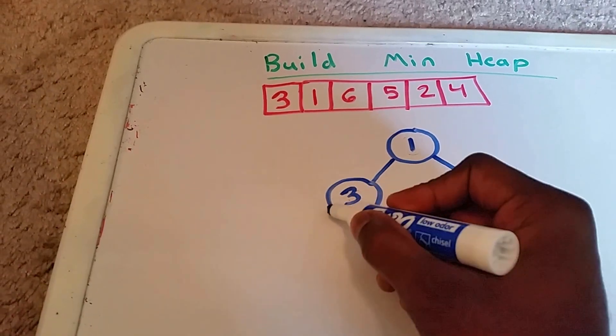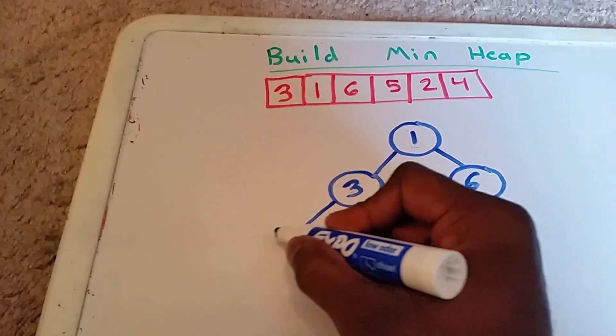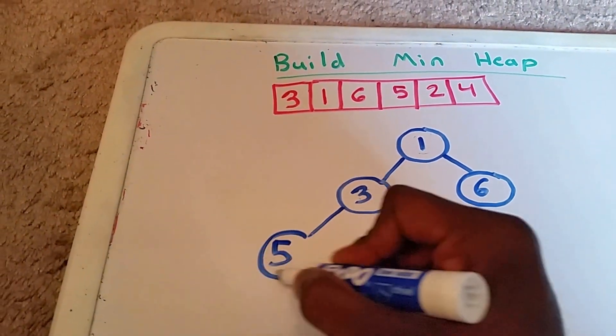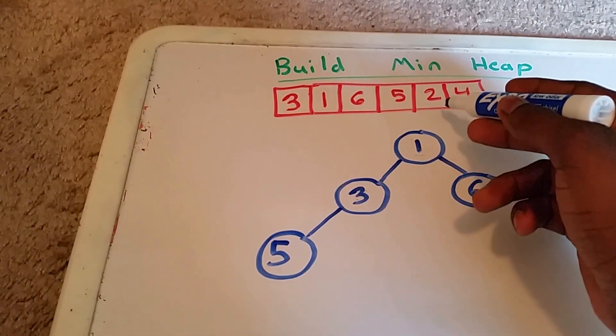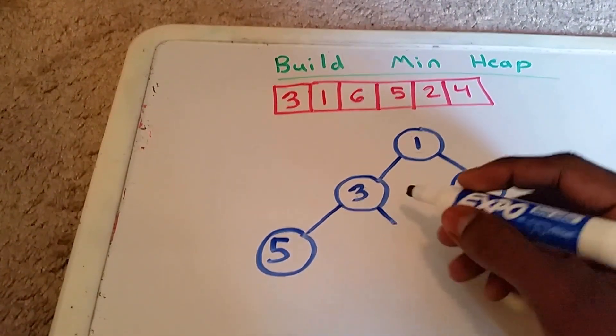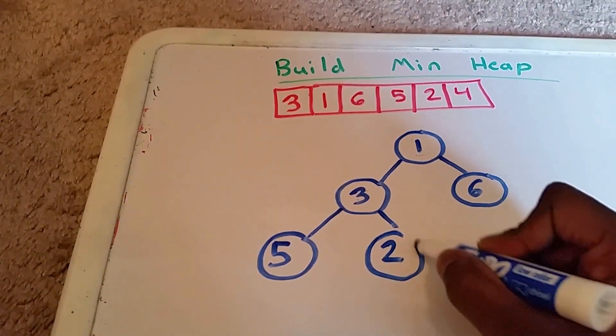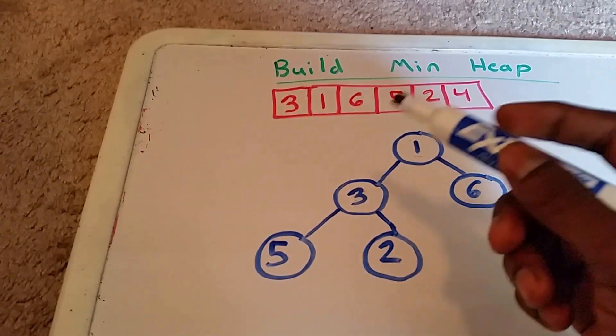We go to the left here, we add the number 5, and 5 is greater than or equal to its parent. So we go to the next element, and we have 2. 2 is less than its parent, so we have to swap.